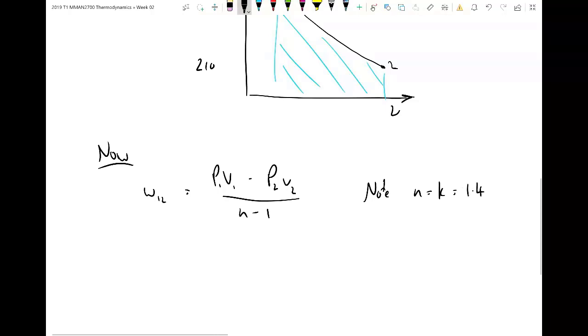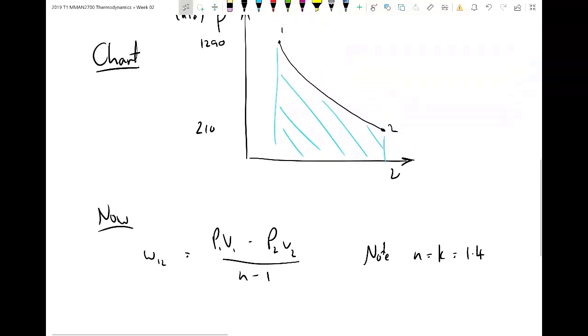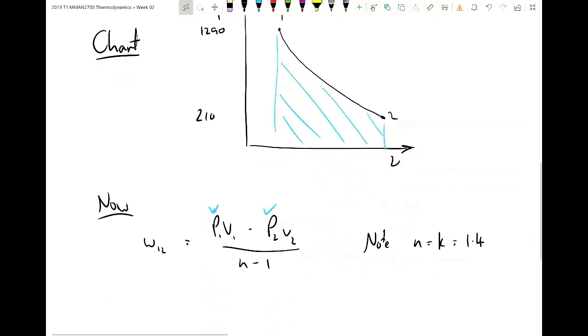Noting N equals K equals 1.4. That's because it's isentropic. If it was another polytropic process, you might be given a polytropic index N. If you were doing something like lab 2, then you'd be determining N. But for this case, we'll get the polytropic index. So what do we know? What don't we know? We know P1. We know P2. I feel like we can determine V1 and V2, but we don't know them yet.